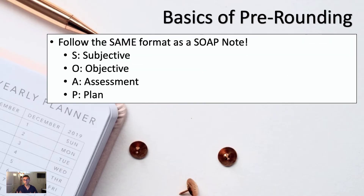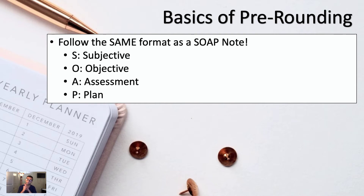The way I break pre-rounding down is into four components, the same way I think about my notes. When you write a note on any patient, it's usually in the format of a SOAP note: subjective aspects, objective aspects, the assessment of the patient — how you think they're doing overall — and ultimately the plan for the patient to be executed during that day. I break pre-rounding down into these exact same four things.